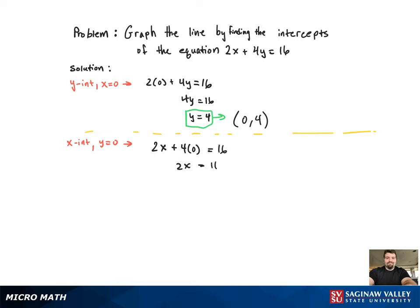Using algebra again, we get x equals 8. That corresponds to the ordered pair 8 comma 0.